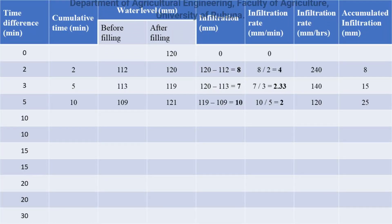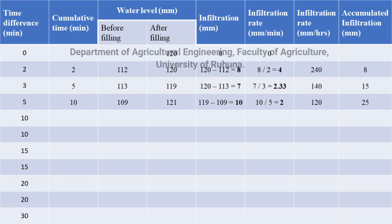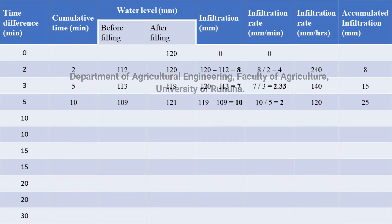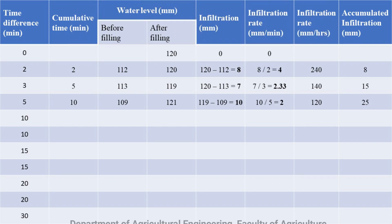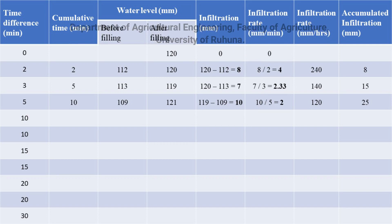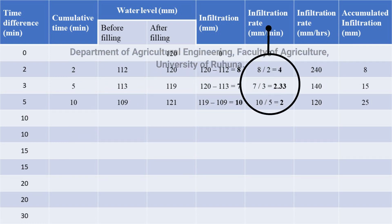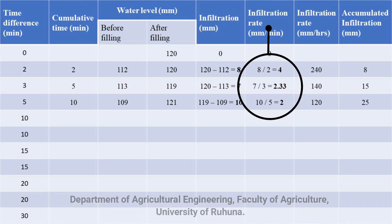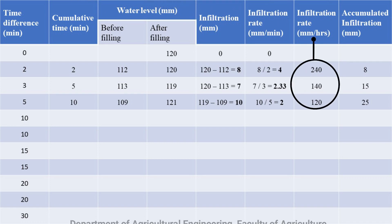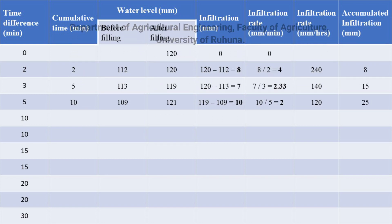This is the way to record data. Water level before filling is the reading of the hook gauge at the end of each time interval. Water level after filling is the reading of the hook gauge after refilling water to the initial level. The infiltration can be calculated by the difference of hook gauge readings of water level after filling and before filling. The infiltration rate can be calculated by dividing the infiltration value by the time taken, in millimeters per minute, then converted into millimeters per hour, which is the standard way of expressing infiltration rate.